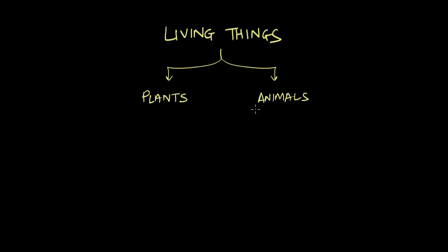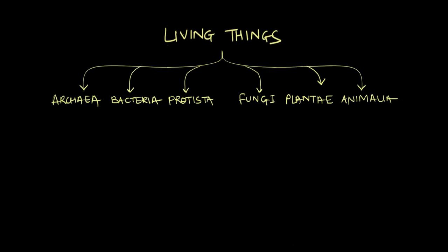Sure, there have been a lot of changes. We have removed multiple organisms from both of these groups and added them into newer kingdoms. Algae, for example — we used to think that algae were plants. Today, they belong to Protista. But we still have the plant and animal kingdoms with us, and they include the most complex organisms ever.